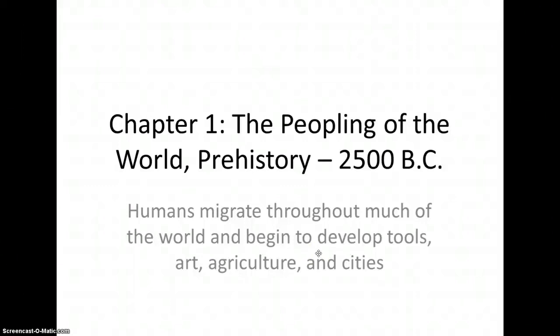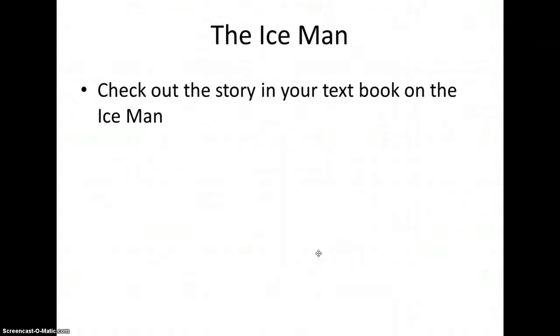World History Chapter 1: The Peopling of the World. Prehistory till 2500 BC. Humans migrate throughout much of the world and begin to develop tools, art, agriculture, and cities.